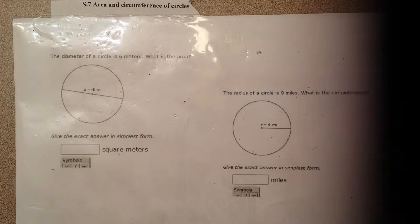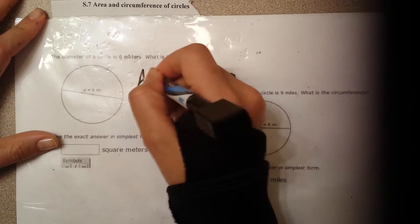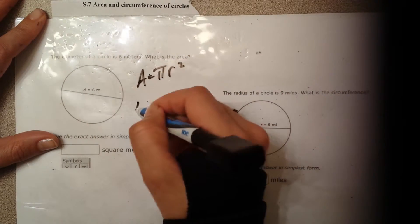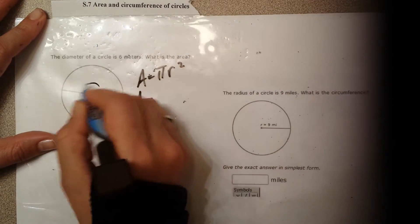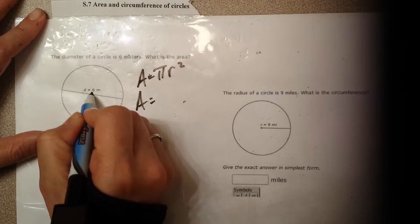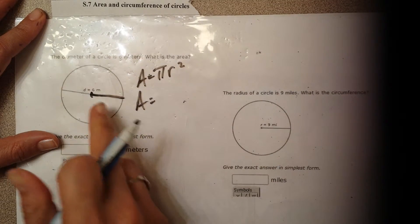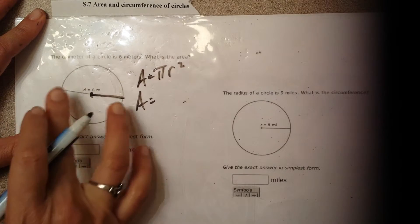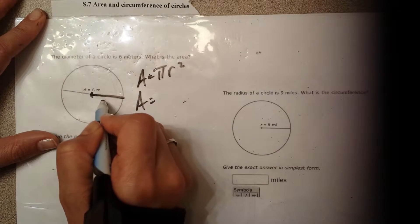So write down the formula. Area of a circle is pi times the radius squared. Here's the problem. Fill in the numbers. I don't have the radius, but I can get the radius from the diameter. We all know that the radius is half of the diameter. It's from the center of the circle to any point. So it's half. So if the diameter is 6, the radius is 3.